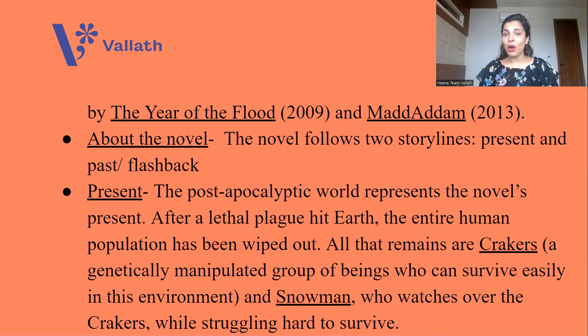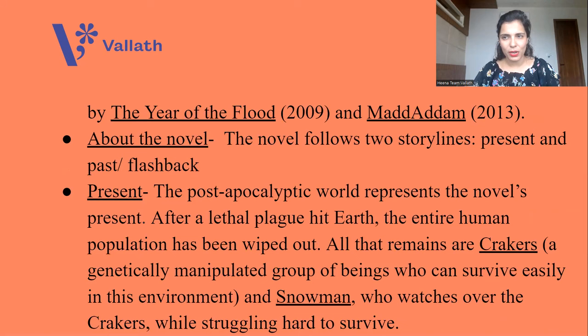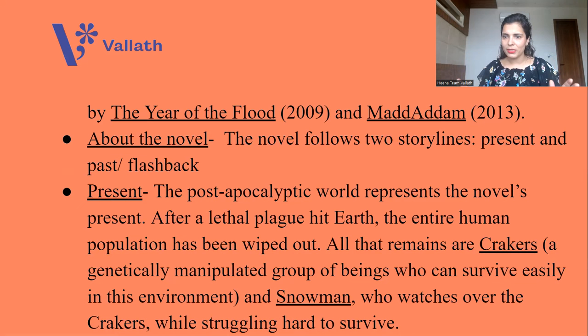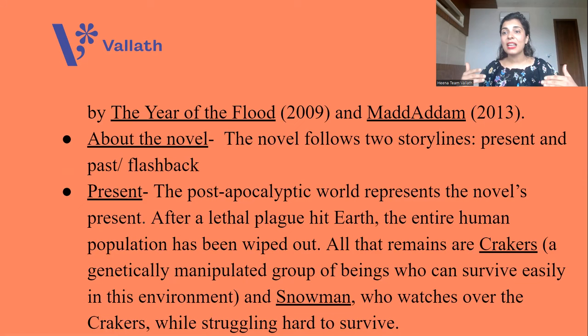The crux of the novel: Oryx and Crake follows two storylines — present and past. The past will also be called flashback. The present is the post-apocalyptic world. Apocalypse, as you know, is the complete destruction of the world — so the world is destroyed and human beings are destroyed. The post-apocalyptic world represents the novel's present. Now how did this apocalypse or catastrophe come about? After a lethal plague hit Earth, the entire human population has been wiped out.